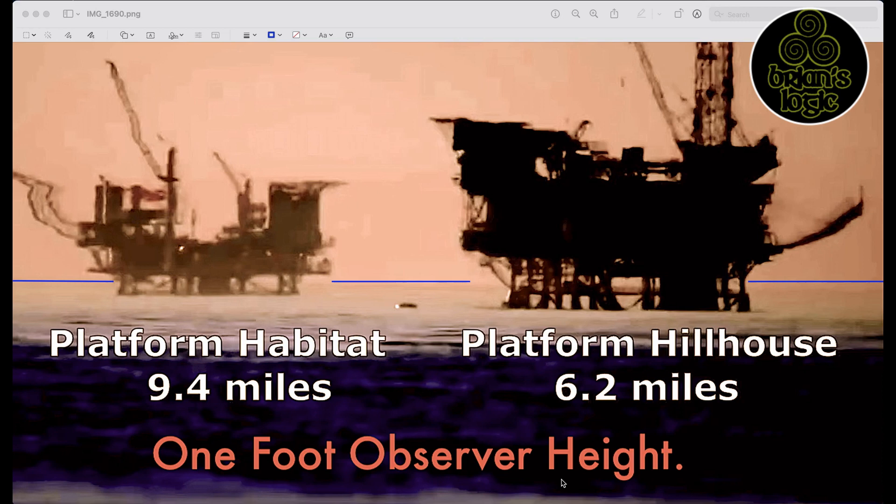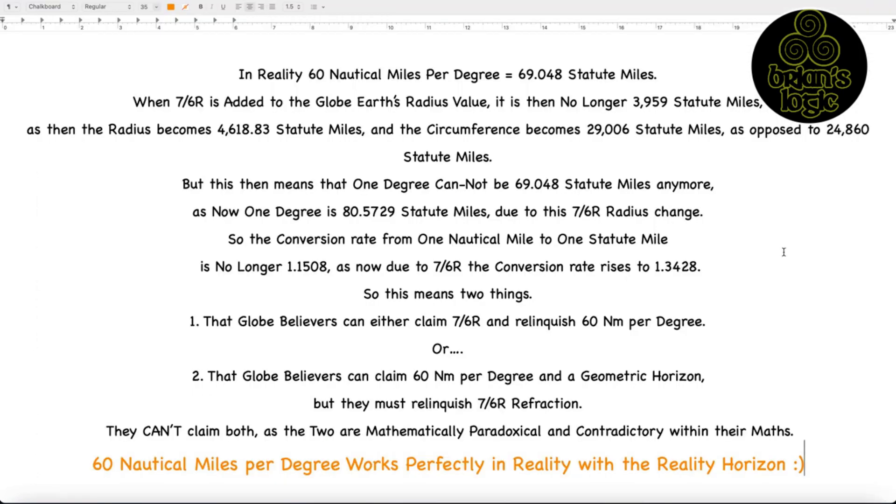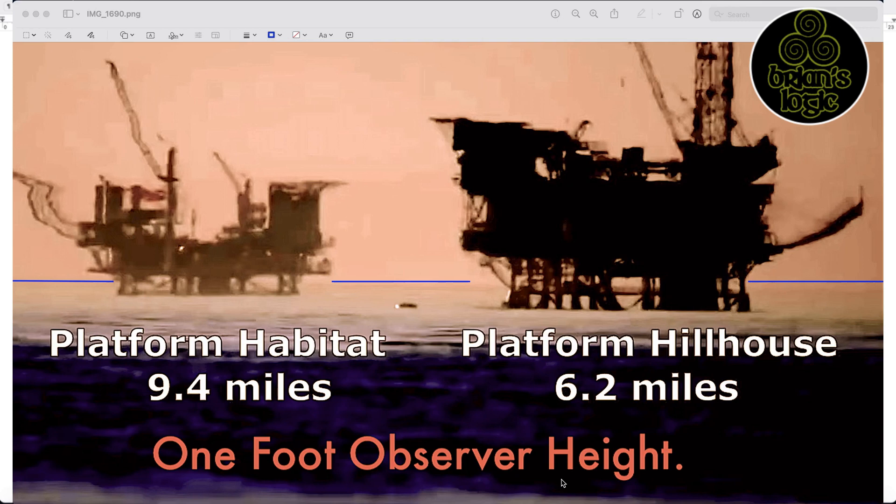It's actually a physical change in the size of a globe. A refracted 7 over 6 size makes the globe bigger. It is then no longer 3,959 statute miles, as then the radius becomes 4,618.83 statute miles. It's like with the Black Swan photograph, they were trying to claim the horizon is refracted.